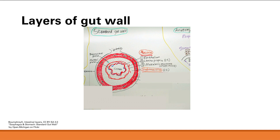The next layer is the submucosal layer. This is just more connective tissue, and its function is to secrete fluid. An important thing not shown in this slide is that it has a nerve plexus called the submucosal plexus — another name for it is the Meissner nerve plexus. Basically the GI system has its own nervous system, its own nervous innervation. That's it for the submucosal layer.